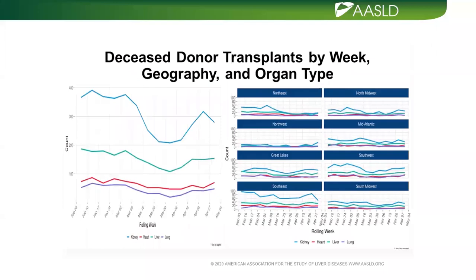Looking by organ type, kidney transplants were most affected, with liver transplants the second most impacted. Liver transplants dropped and then had about a half recovery, paralleling donor trends. The drops were variable by region.